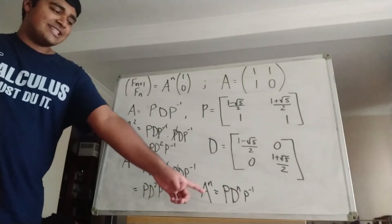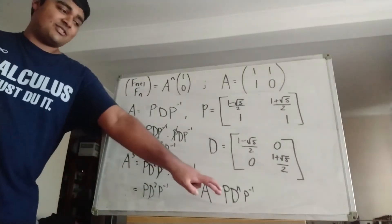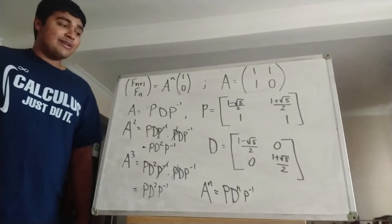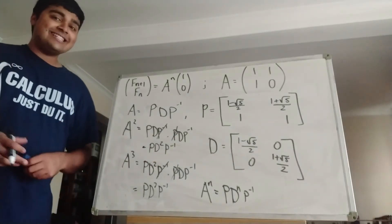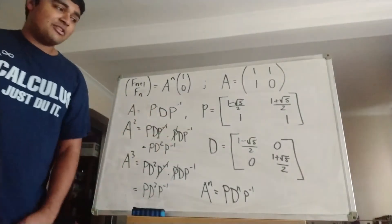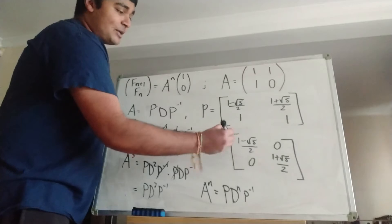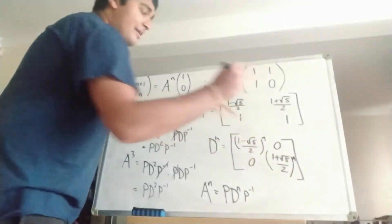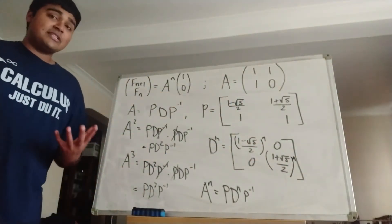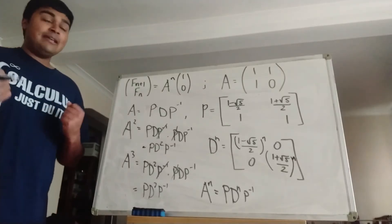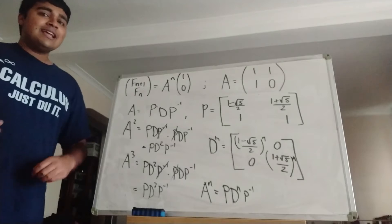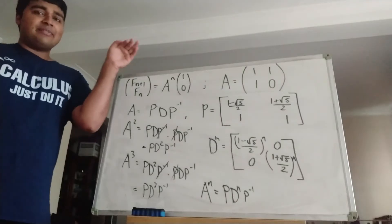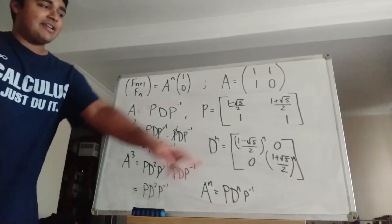Now you may ask: we've written a matrix to the power of n as two other matrices multiplied by another matrix to the power of n — so how have we made life any easier? Well, the key is that D is a diagonal matrix, and diagonal matrices are very, very easy to raise to the power of n. You can verify for yourself that if you raise any diagonal matrix to the power of n, you're essentially just raising each of the diagonal elements to the power of n. You can check this by induction if you want. So T to the power of n is just the same matrix with each diagonal element raised to the power of n.